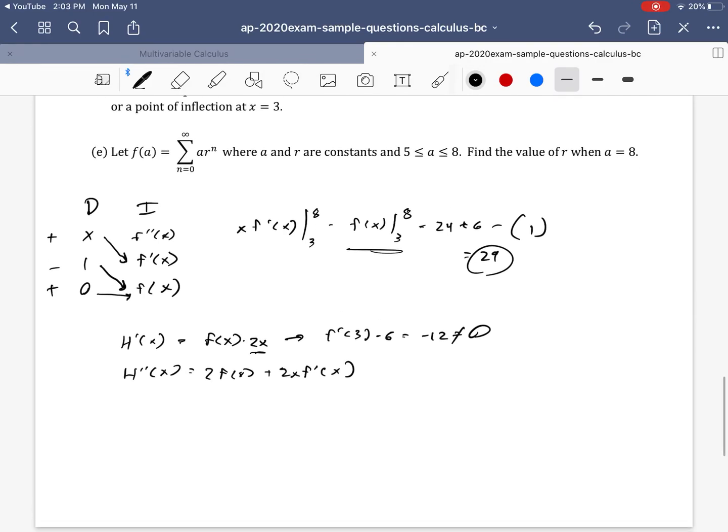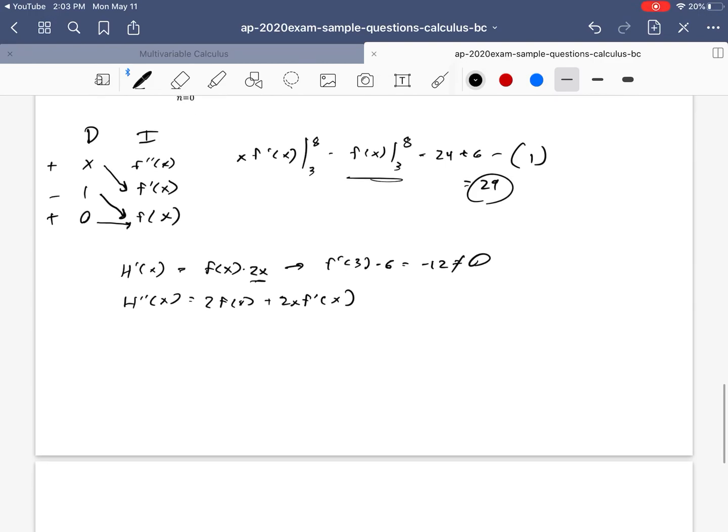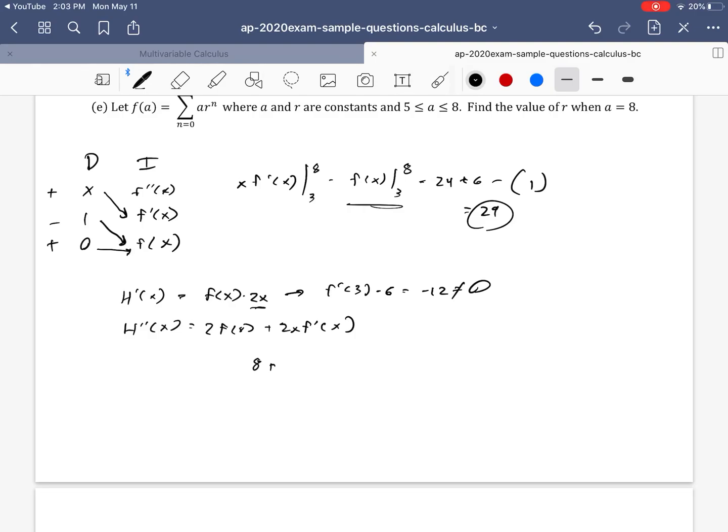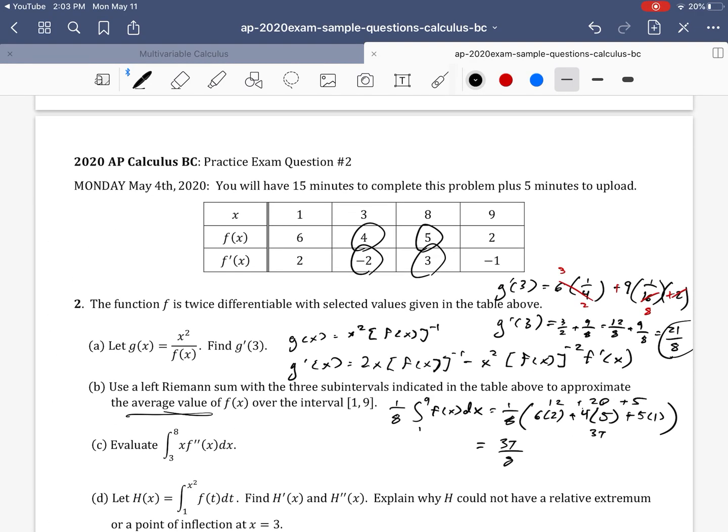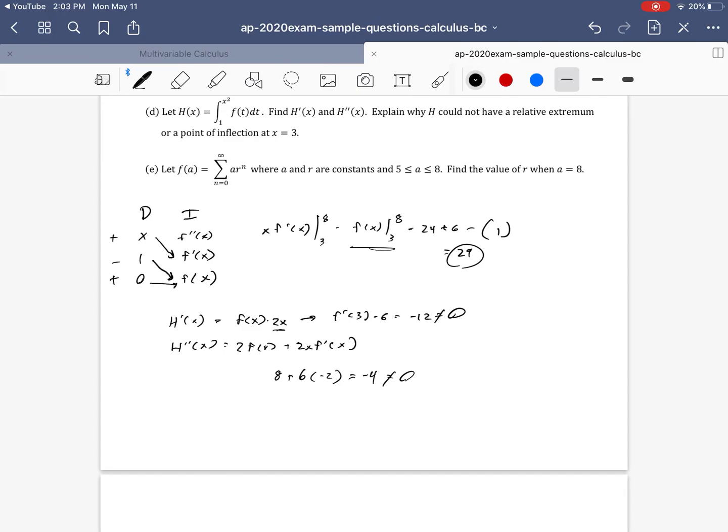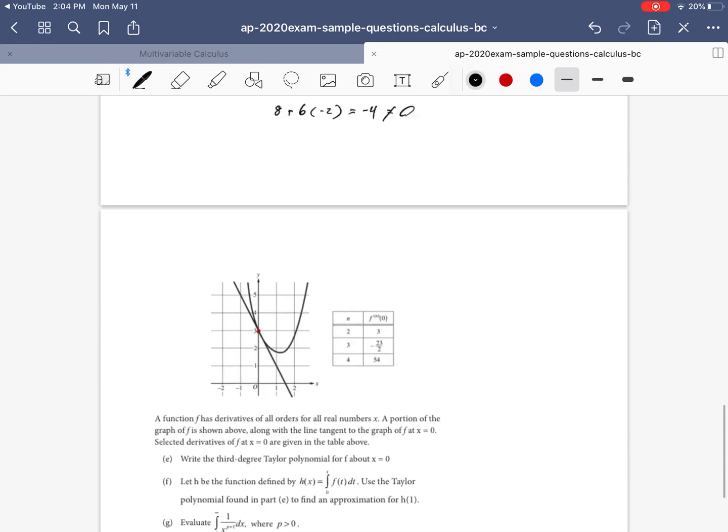For the point of inflection part, notice that a necessary condition for that is h double prime of x equals 0. So h double prime of 3 then would be 2 times f of 3. f of 3 is 4. So we have 2 times 4, which is 8, plus 2 times 3 times f prime of 3. So we have, oh, negative 2. So we have 8 minus a 12 or a negative 4, and that's, again, not equal to 0. And so since we don't have the second derivative equal to 0 or the first derivative equal to 0, we cannot have points of inflection or relative extremum, so either max or minimums, at x equals 3.